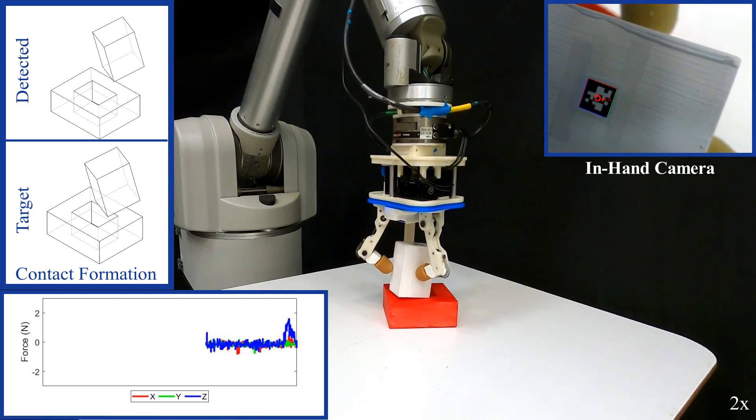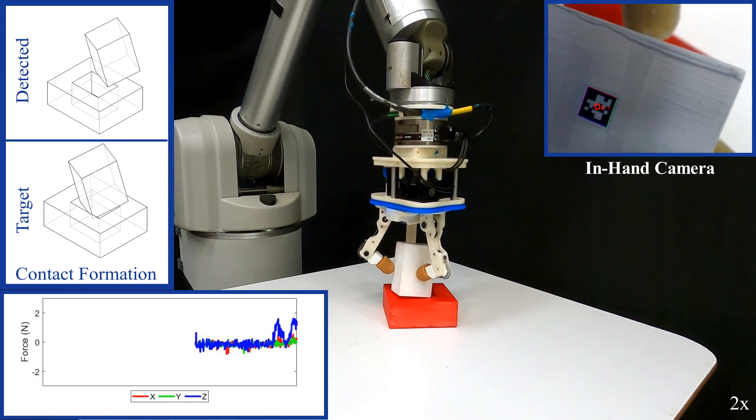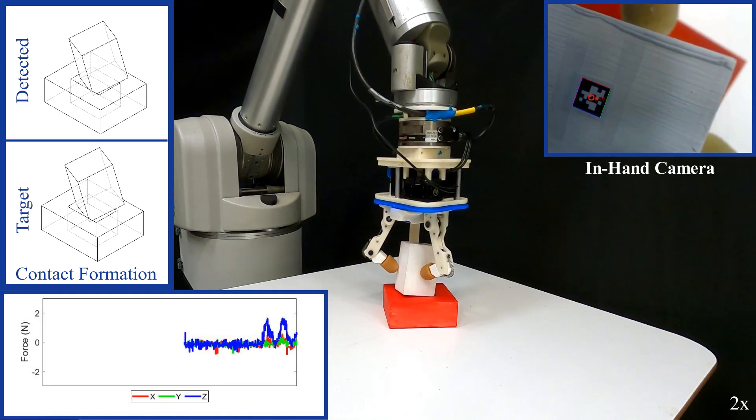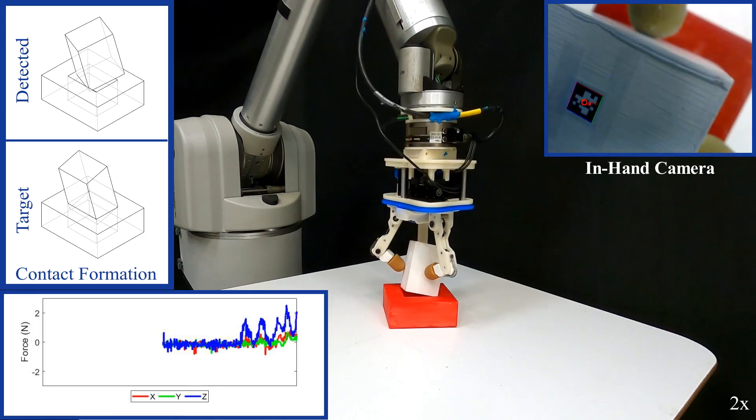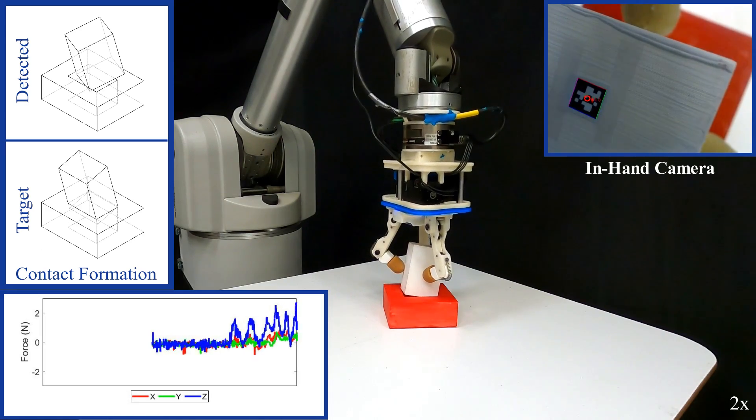Once this is acquired, an exploration procedure along the contact plane begins until a new contact formation is achieved, in our case, the target formation. This formation is found and then modulated once a force along an orthogonal direction is achieved.